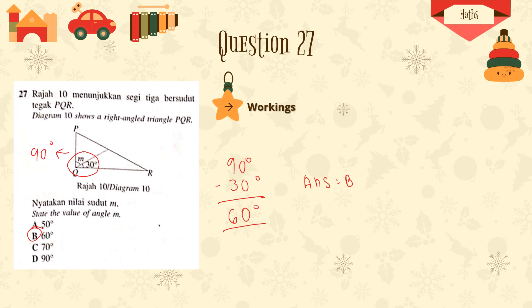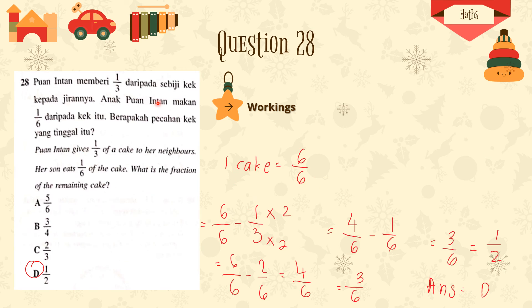Alright. Question 27. So this question is kind of easy. But we have to know the angle. So let's first read the instruction. Diagram 10 shows the right angle triangle PQR. State the value of angle M. So first, we have to know this kind of right angle always should be 90 degrees. So they have already given us this is 30 degrees. So in order to find M, 90 minus 30, we will get 60 degrees. So the answer is B.